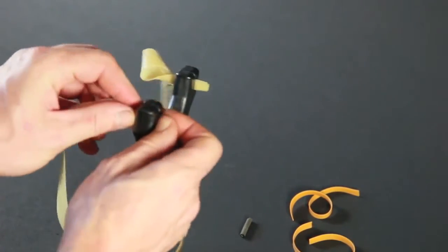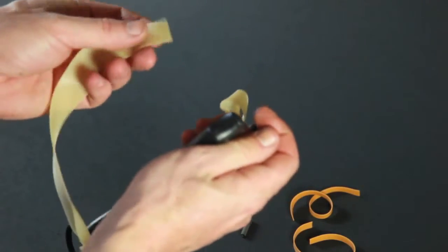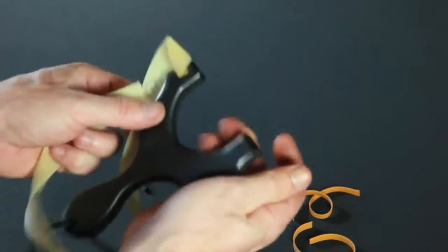You can see here all we've done is fold the bands over, stretch them and slide them in. Adjusting them is as simple as sliding them out, refolding, and popping them back into place.